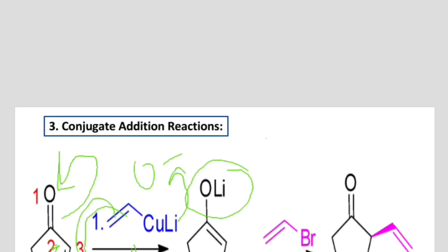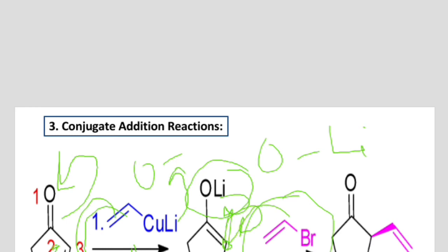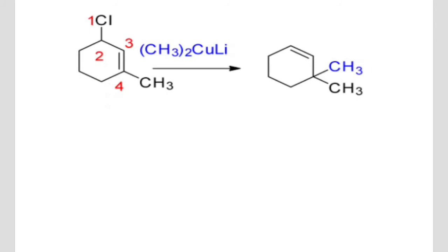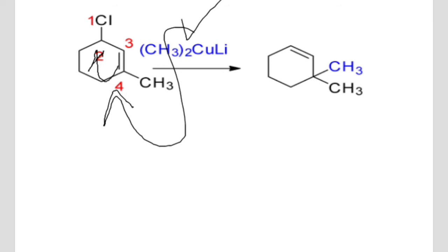Now the bond between O and Li will shift, and this bond shifts toward that position and gets a negative charge. The incoming nucleophile will attack on this carbon and form the product. In this simplest section, the Gilman reagent attaches at the fourth position; this bond shifts at the position between carbon 2 and carbon 3.